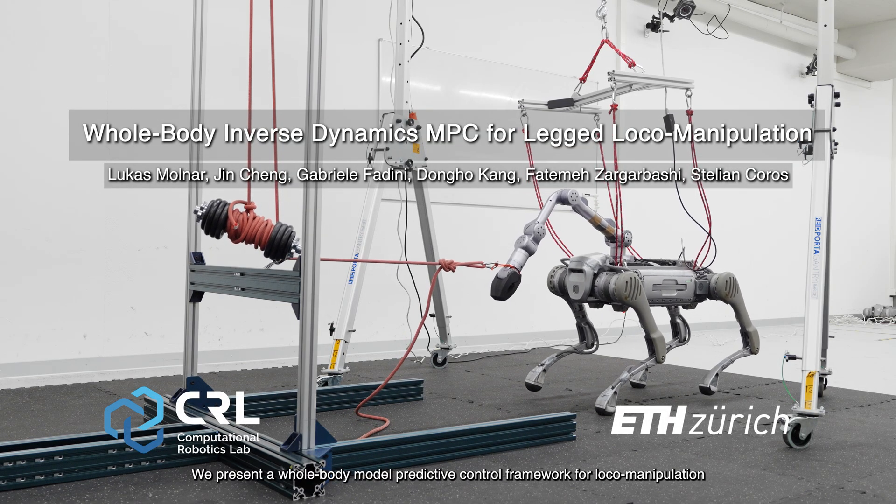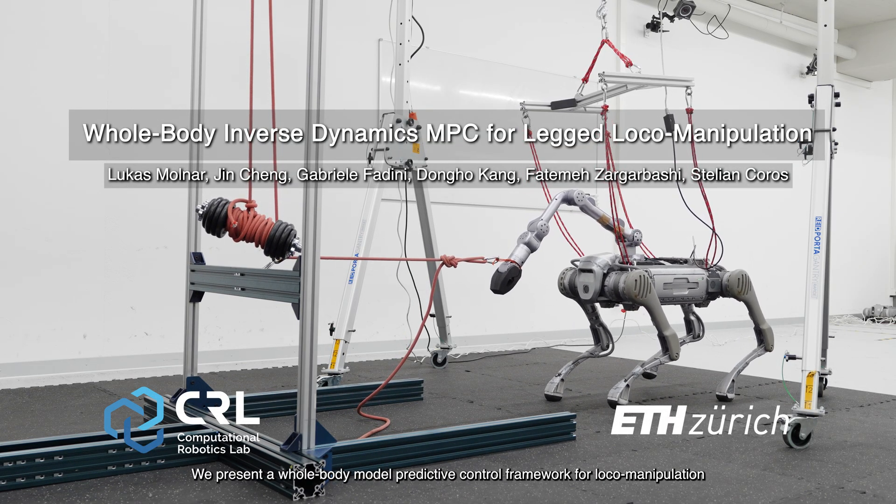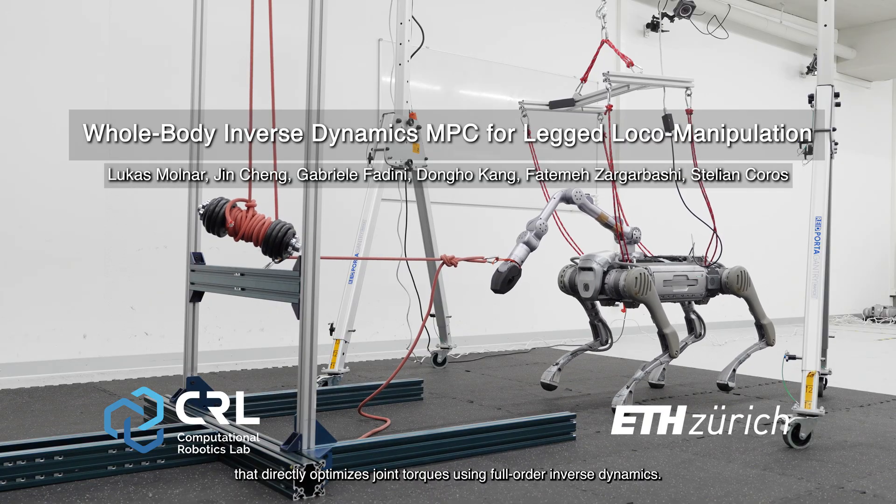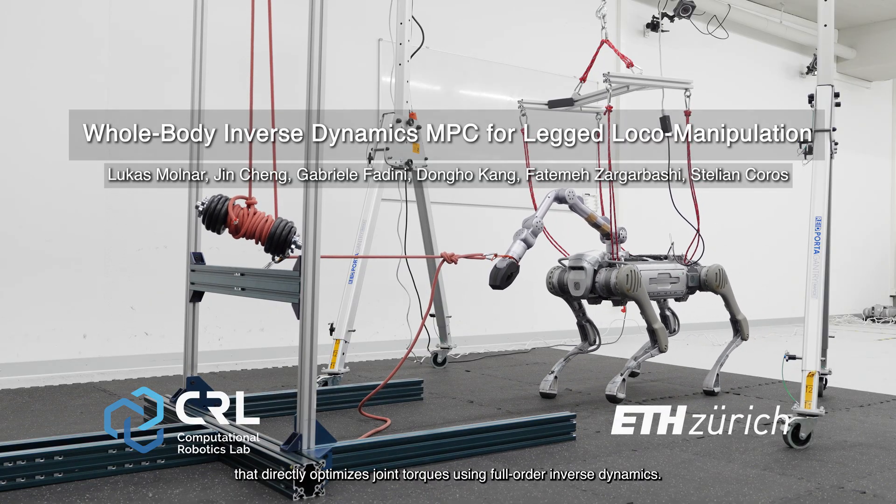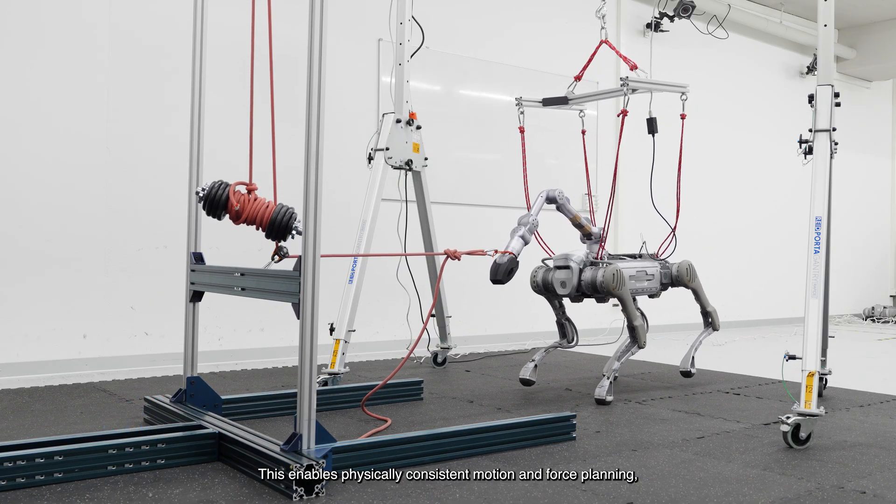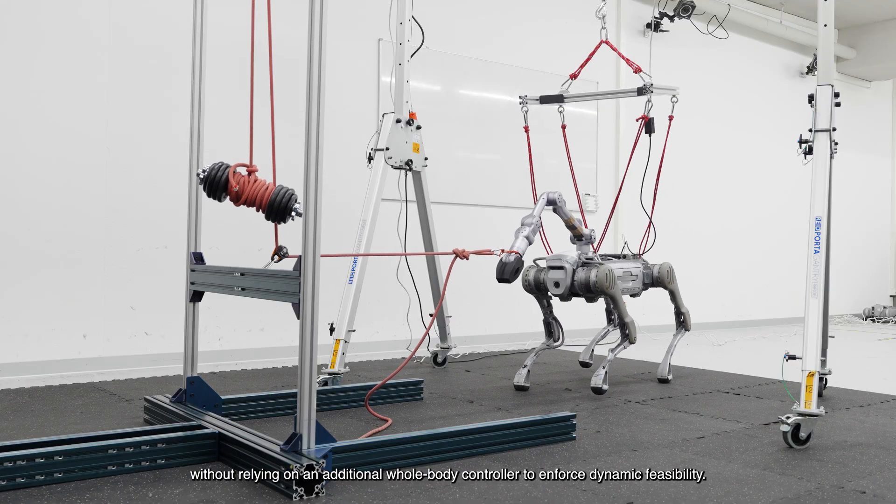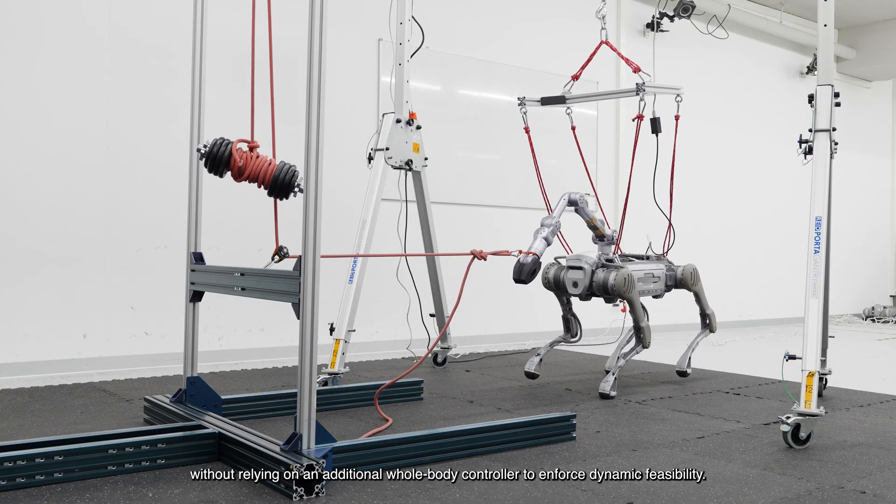We present a whole-body model predictive control framework for loco-manipulation that directly optimizes joint torques using full-order inverse dynamics. This enables physically consistent motion and force planning without relying on an additional whole-body controller to enforce dynamic feasibility.